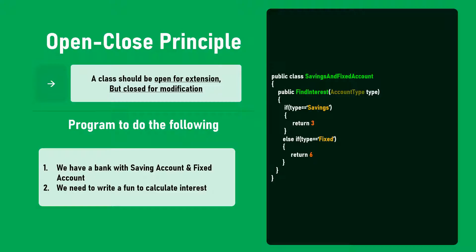How would a bad programmer write this? He would create a class SavingsAndFixedAccount with a findInterest function that accepts an account type. If the account type is savings, it returns 3% interest; if it is fixed, it returns 6% interest. What's wrong with this? If one year later the bank creates a new children's account with 4% interest, this code needs to be modified — that's against the Open-Close Principle.